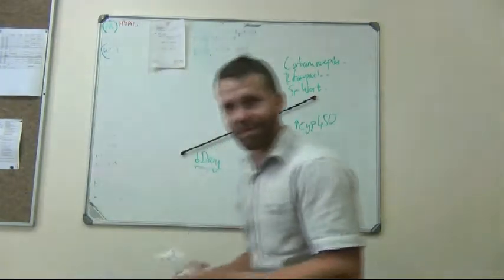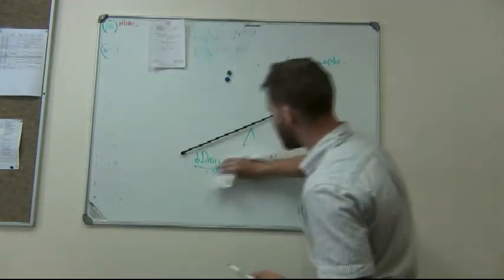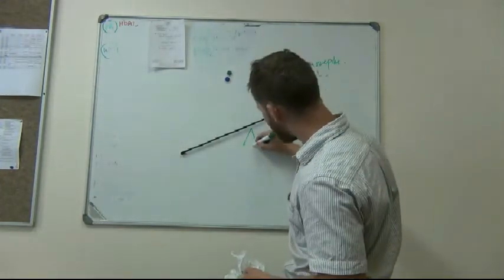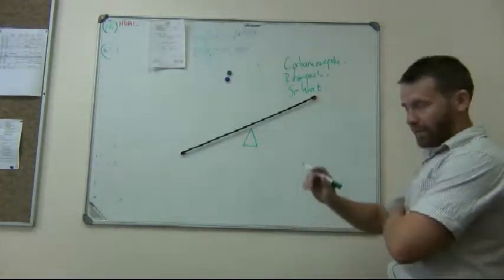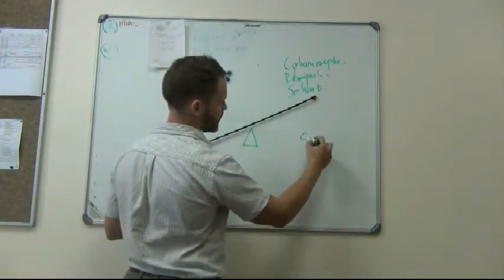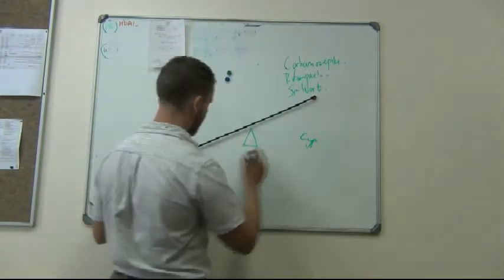Now I want to show you the opposite end of the spectrum. Always think of this thing as like a pivot, think of it as a seesaw. Let's say CYP enzyme is the amount and this might be the drug.